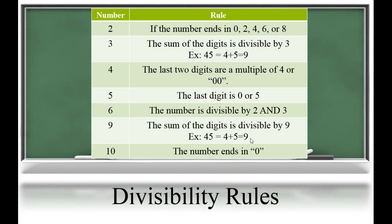In this unit, students are also going to learn divisibility rules. The purpose of learning divisibility rules is so students can look at a number, such as 45, and tell right away if it is divisible by a number. Students should be able to recognize that if a number is divisible by a number, then that number is its factor. So if 32 is divisible by 2, that means 2 is a factor of 32, and that 32 is a multiple of 2.